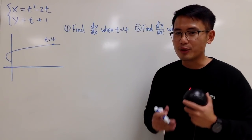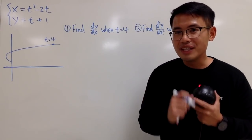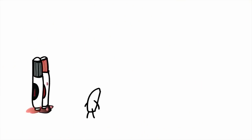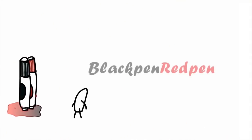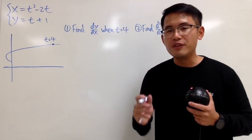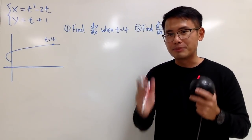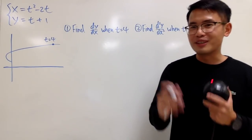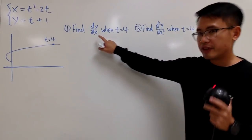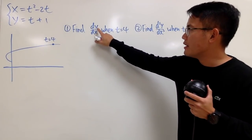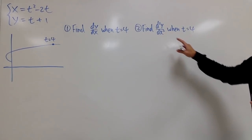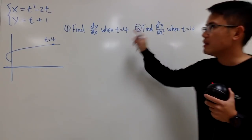In this video, we are going to do some derivatives with parametric equations. Before we start, I just want to ask you guys to subscribe if you haven't done so already, and for my subscribers, thank you so much. In particular, we are focusing on getting dy/dx and d²y/dx² when t is 4.